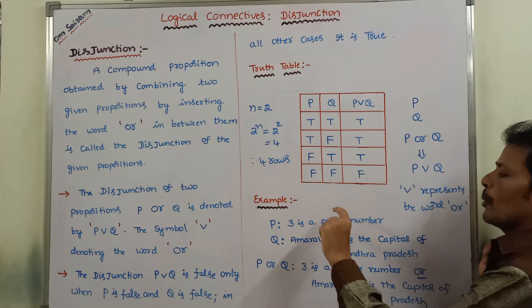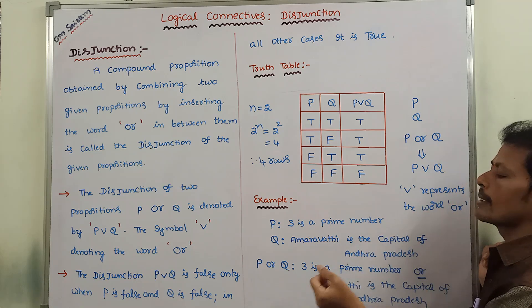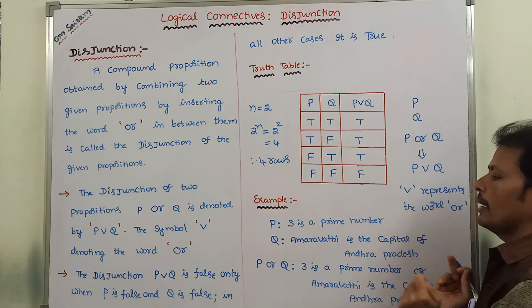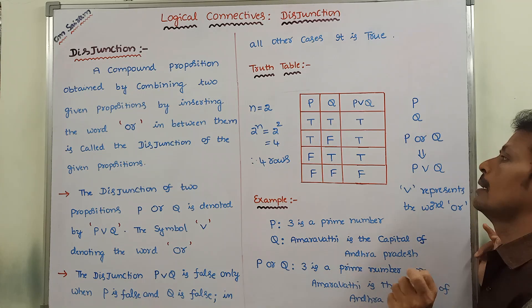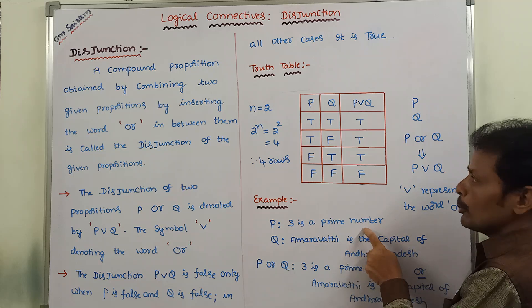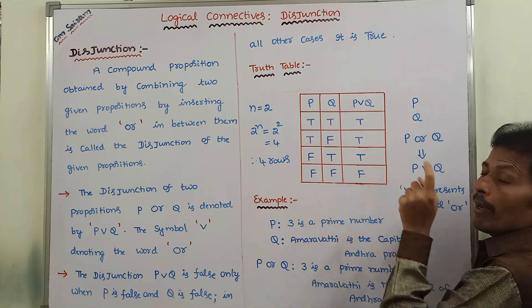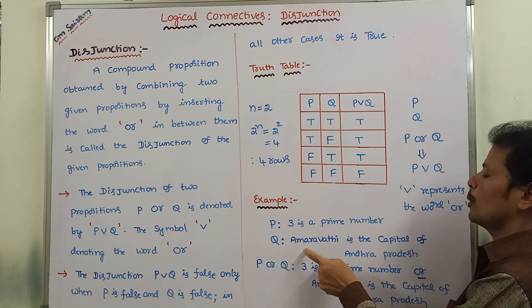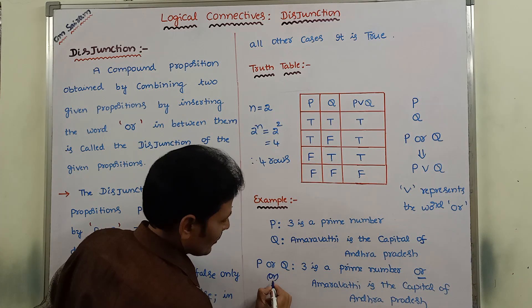To summarize the truth table cases: when P is false and Q is false, P OR Q is false. When P is false and Q is true, P OR Q is true. When P is true and Q is false, P OR Q is true. When P is true and Q is true, P OR Q is true.